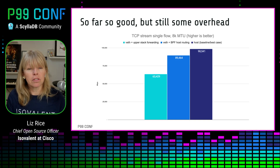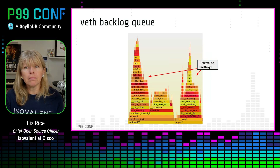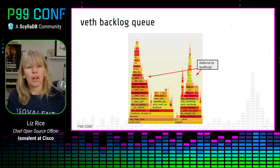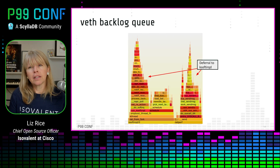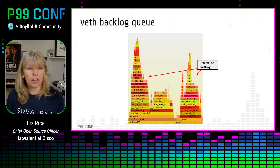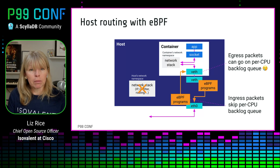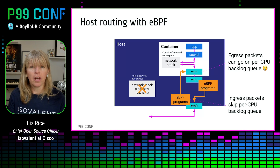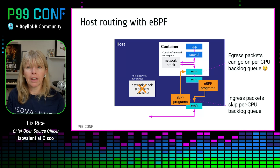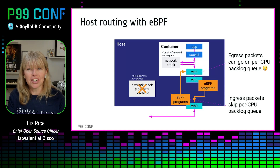But there must be something else that's holding us back, and what that is is illustrated in this flame graph. Under load, the network stack can't always send a packet in the context of the application thread. Packets might get put onto a per-CPU queue and get deferred and sent later by the kernel's soft interrupt daemon. With eBPF programs doing the host routing, this doesn't happen for ingress packets because the bpf_redirect_peer helper function can skip any per-CPU queuing. But in the egress direction, packets can still get put on a backlog queue in the container's virtual Ethernet device.